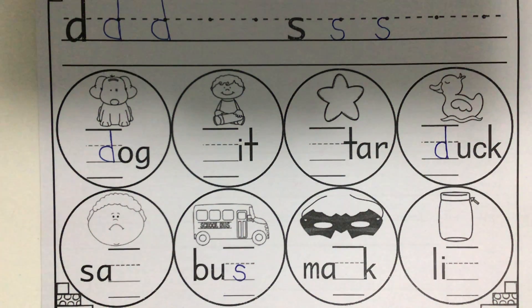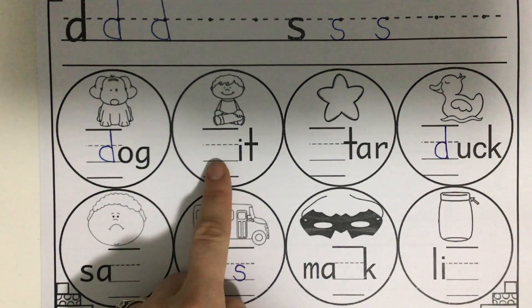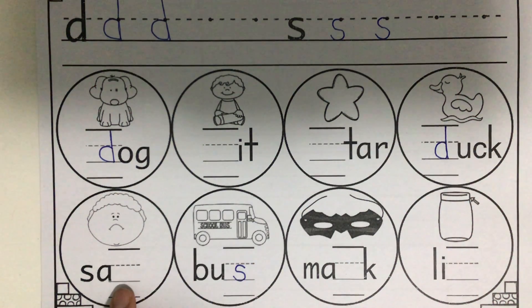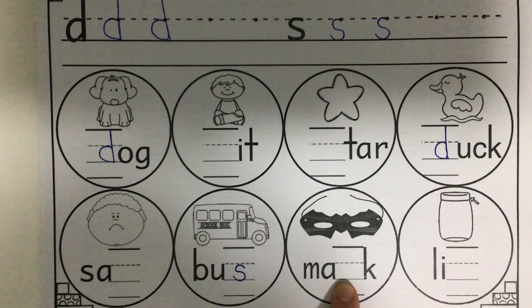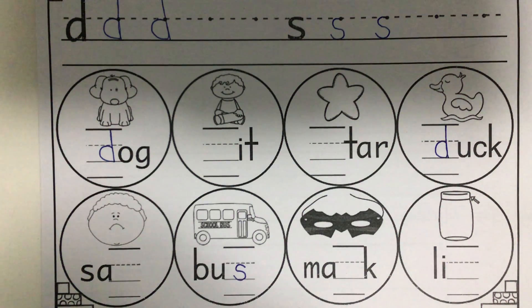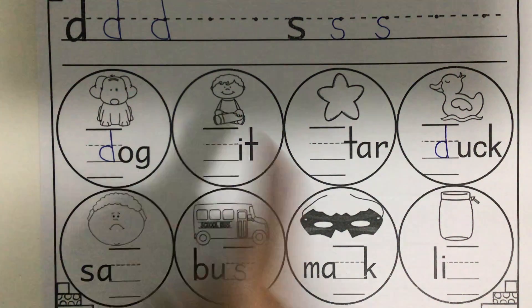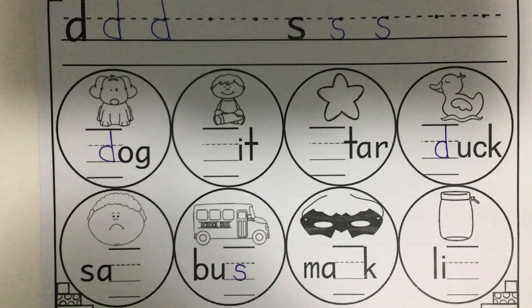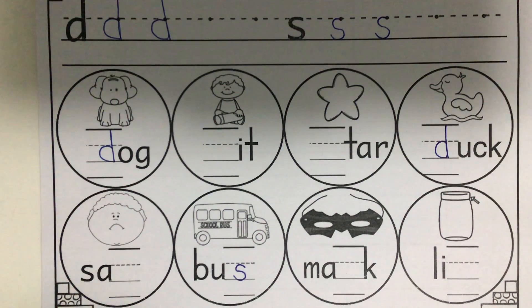I want you to do the rest of this worksheet on your own. Say the picture, look at the missing sound — some of the beginning sounds are missing, some of the ending sounds are missing, and there's even a middle sound missing. Listen to the word, decide which sound is missing, and write that sound down. Say: sit, star, sad, mask, lid. Go ahead and write those sounds down. When you're finished, take a picture and send it to me on Seesaw. See you next time.